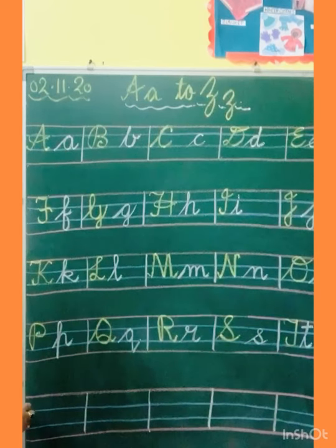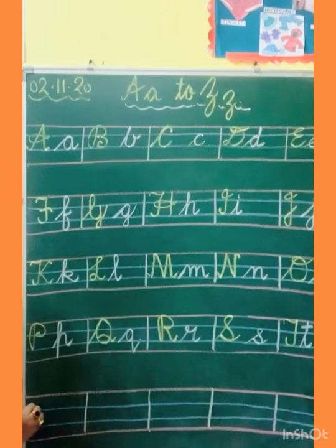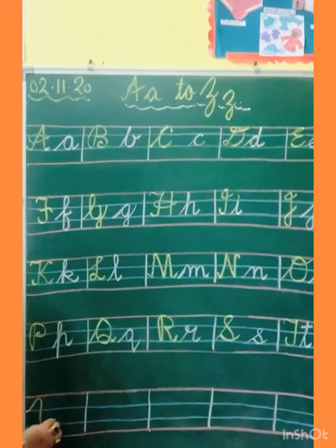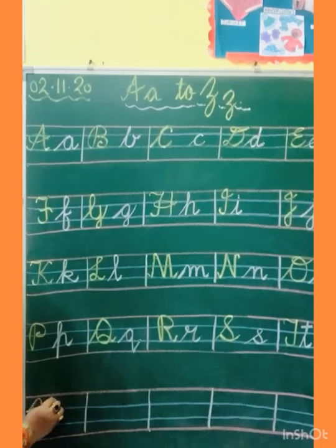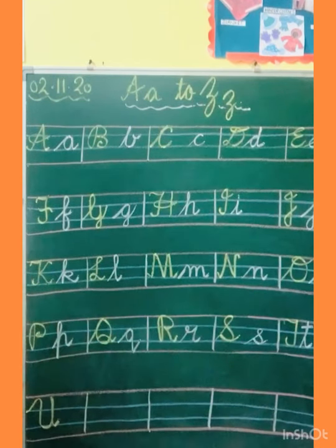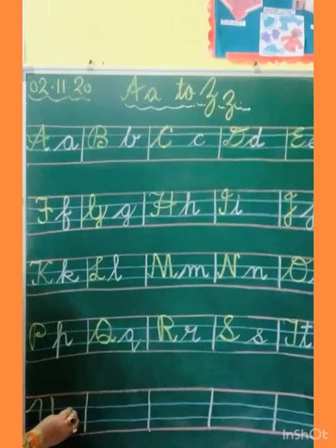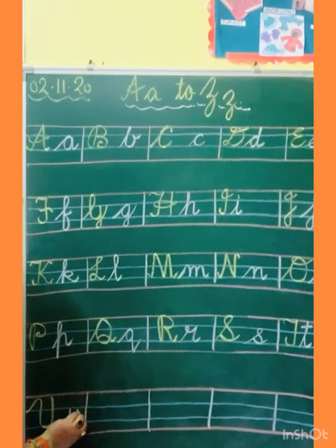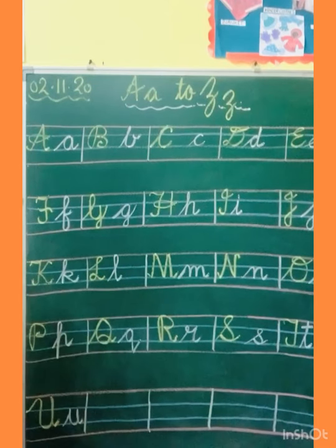Now U. Capital U: make slanting line, turn, come down, touch the third line, go up, come down, and kick. This is capital U. And small U: slanting line, come down, make circle, go up, and kick. This is small U.